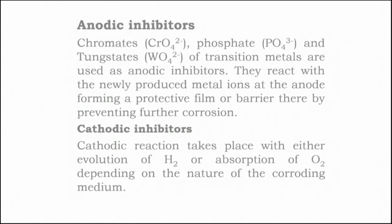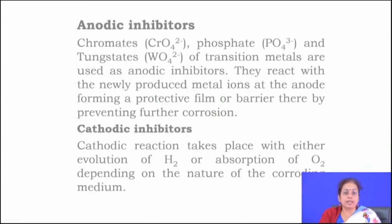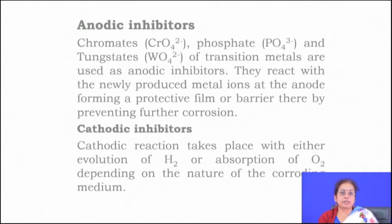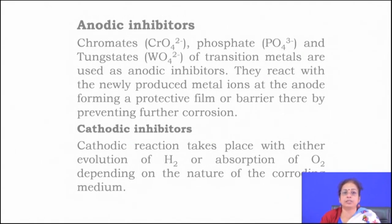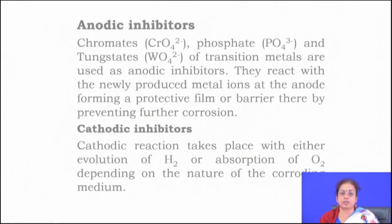Anodic inhibitors help in the formation of a thin protective film, similar to the anodic protection system. In anodic protection, the component acts as an anode so that a thin continuous passive film forms. Anodic inhibitors are added to react with the metal surface and form a metal compound that prevents further corrosion. Cathodic inhibitors work by reactions involving hydrogen evolution or absorption of oxygen depending on the nature of the corroding media, making the component act as a cathode so it no longer reacts.